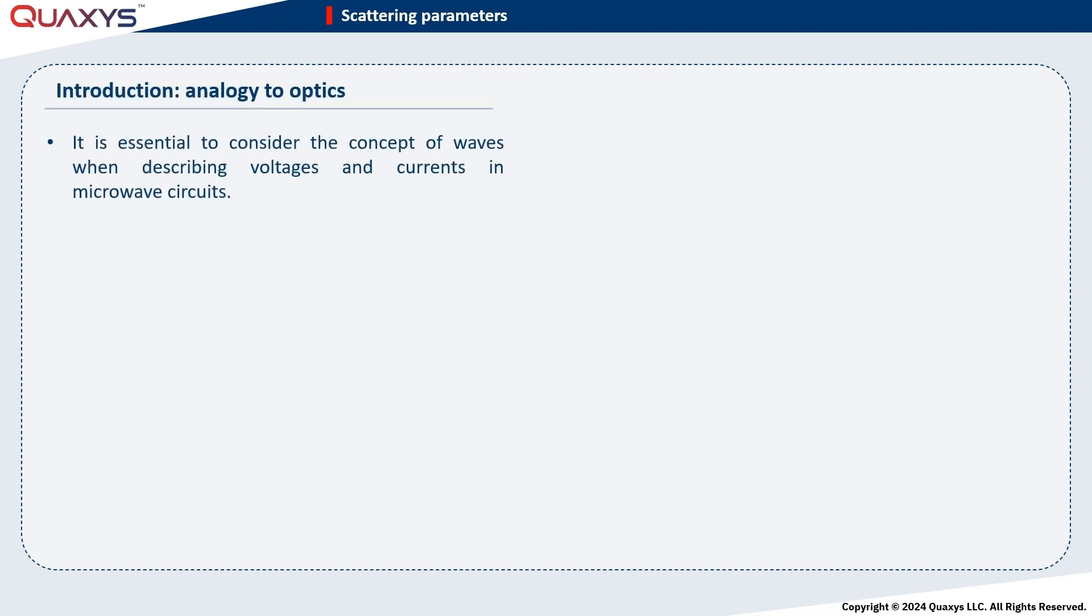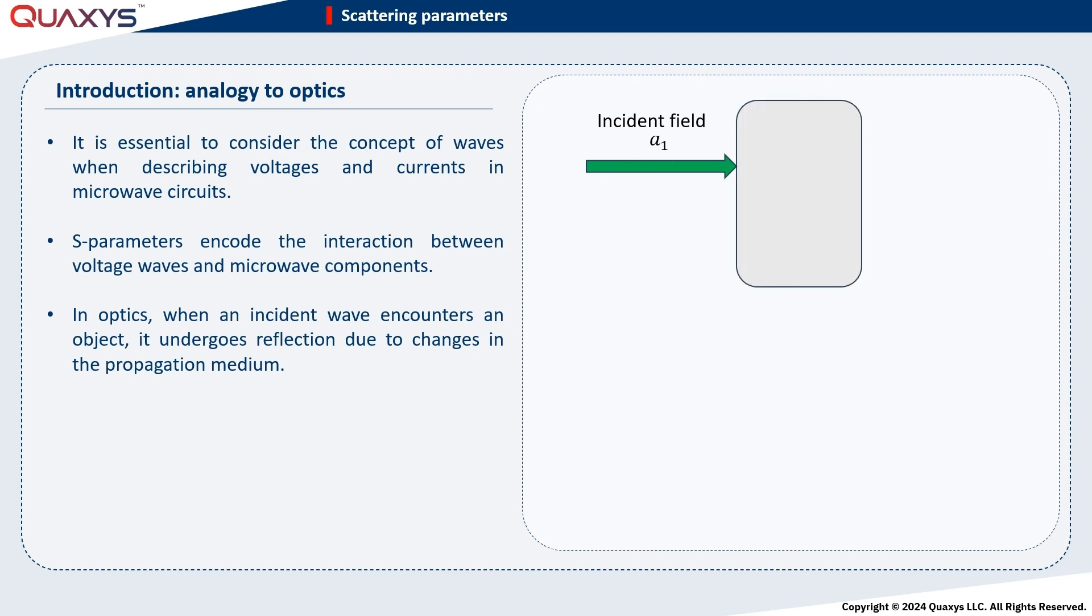For microwave circuits, unlike low-frequency counterparts, it is essential to consider the concept of waves when describing voltages and currents. S-parameters encode the interaction between voltage waves and microwave components. The wave behavior in microwave circuits becomes evident as signals propagate. Reflection occurs when there is an impedance mismatch, analogous to how light reflects when encountering a change in the propagation medium, such as striking a piece of glass. This phenomenon results in a portion of the microwave signal reflecting back to the source while the rest transmits to the other ports.